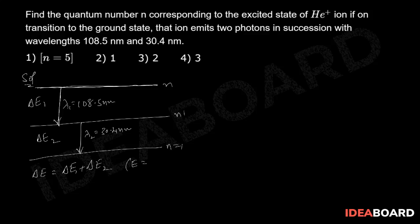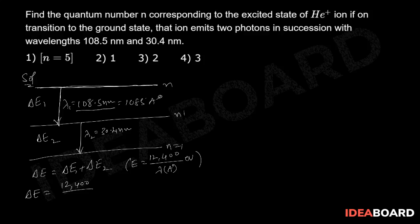Using the formula E = 12400/λ (in angstroms) electron volts, we calculate the total energy released during de-excitation from the nth state to the ground state. ΔE = 12400/1085 angstroms plus 12400/304 angstroms. Converting: 108.5 nm = 1085 Å and 30.4 nm = 304 Å.